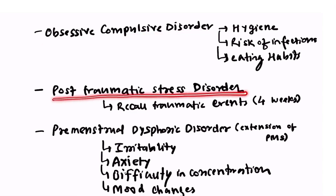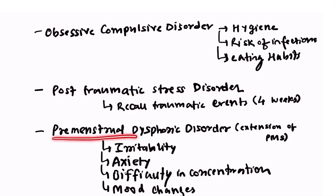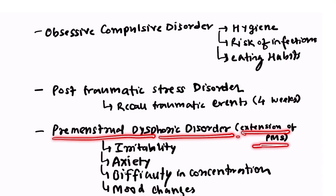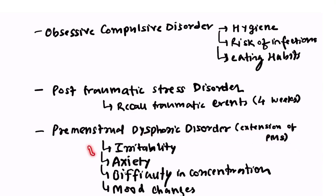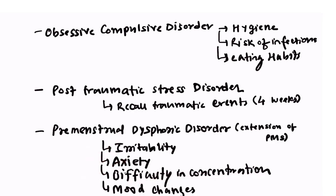Paroxetine is also used for obsessive compulsive disorder, posttraumatic stress disorder, and premenstrual dysphoric disorder. Premenstrual dysphoric disorder is an extension of premenstrual syndrome and consists of irritability, anxiety, difficulty in concentration, and mood changes.